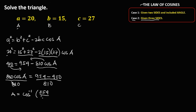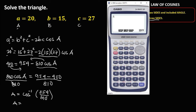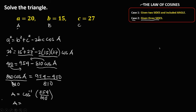Angle A equals the inverse cosine of 554 divided by 810. So angle A equals 46.85 degrees.